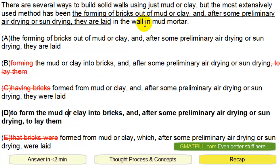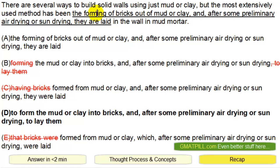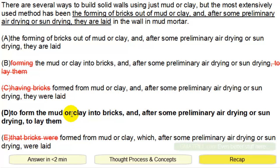As a recap: the sentence suggests one method, but then this other method. Inside the underlined answer choice is a keyword AND, so we just have to make sure what's on the left and the right are consistent. The 'after blah blah blah' part is just fluff. What we have to pay attention to are the verbs — 'forming' and 'to lay' which is inconsistent, versus 'to form' and 'to lay,' which is consistent. That's why D is correct.